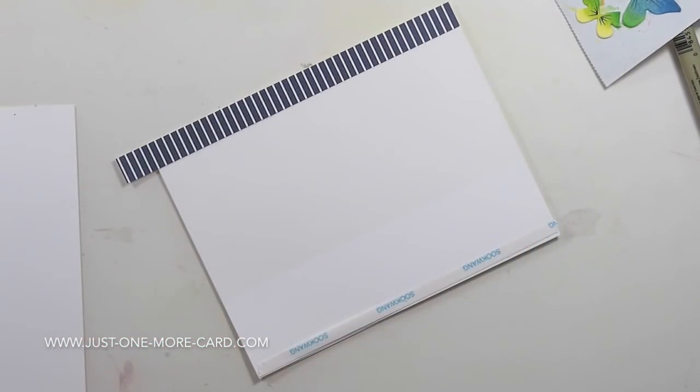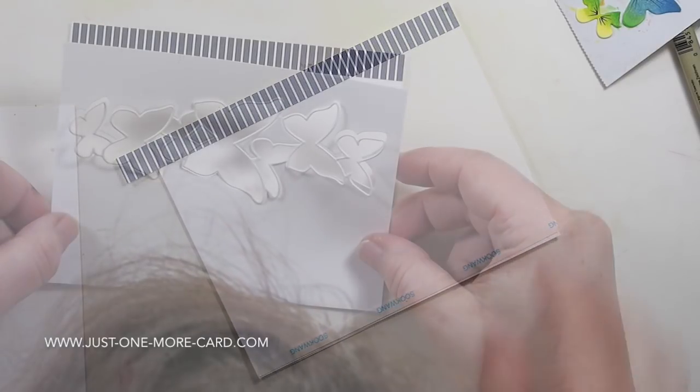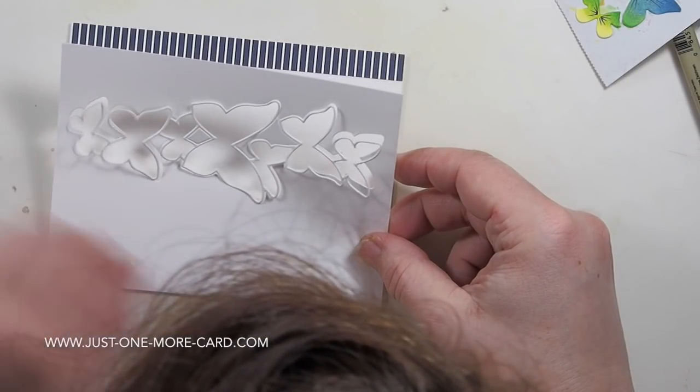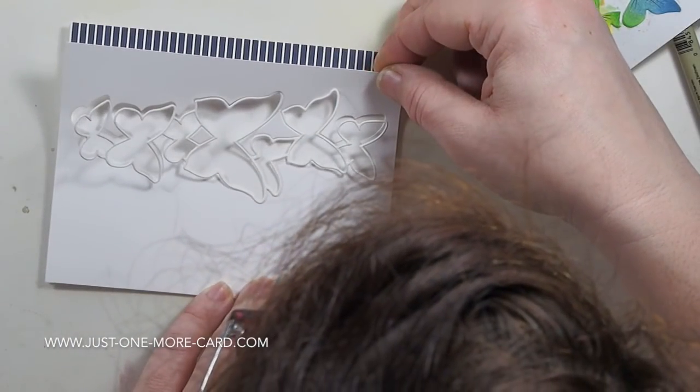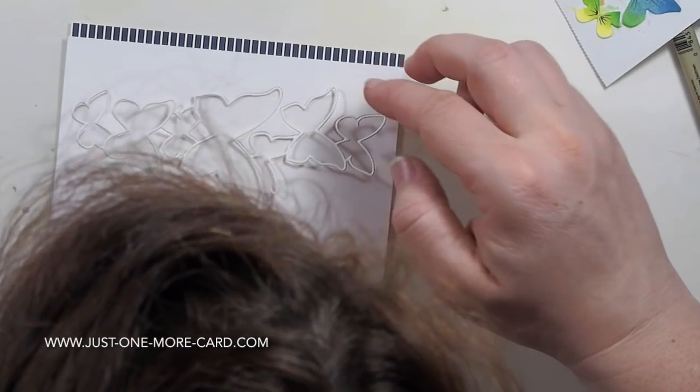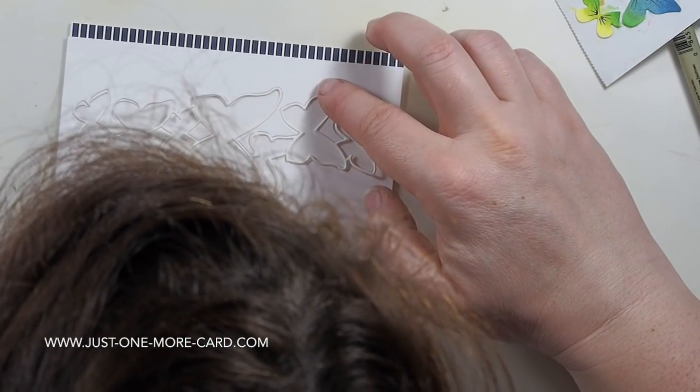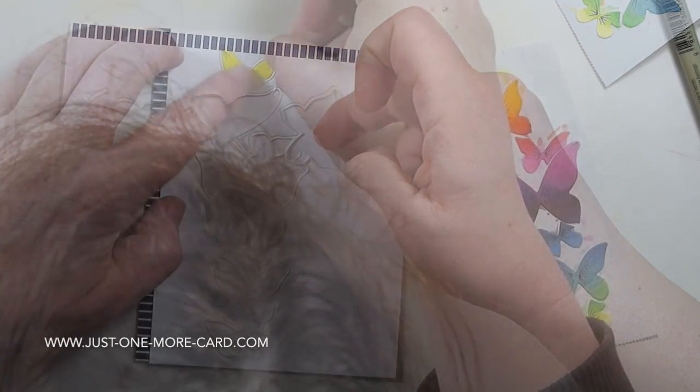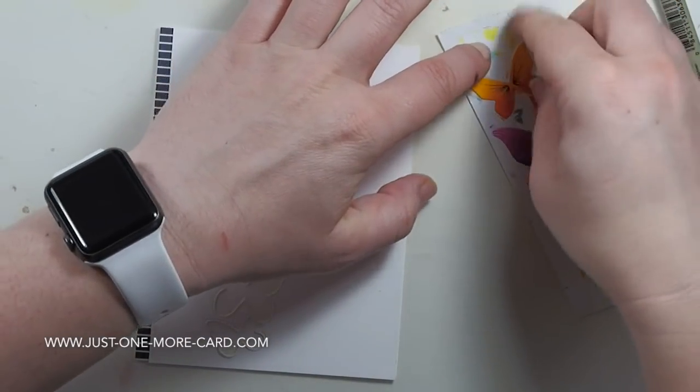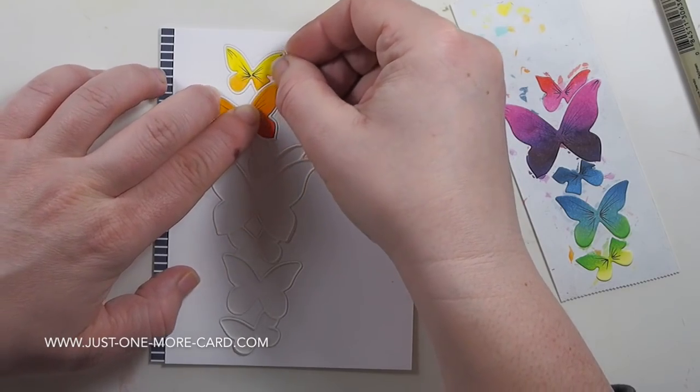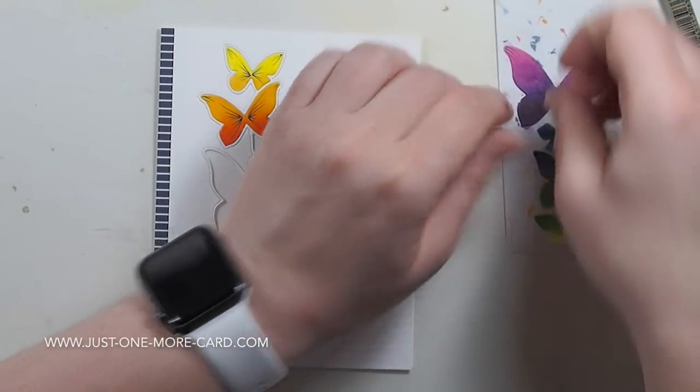I'm adhering some more double sided adhesive here to make sure that my panel will stay down. Of course you don't have to use the butterfly drift, whatever kind of dies you use, you can use the same die over and over to create this effect as well. Strictly speaking, you don't even need the outline, but here it would be kind of weird to not use it.